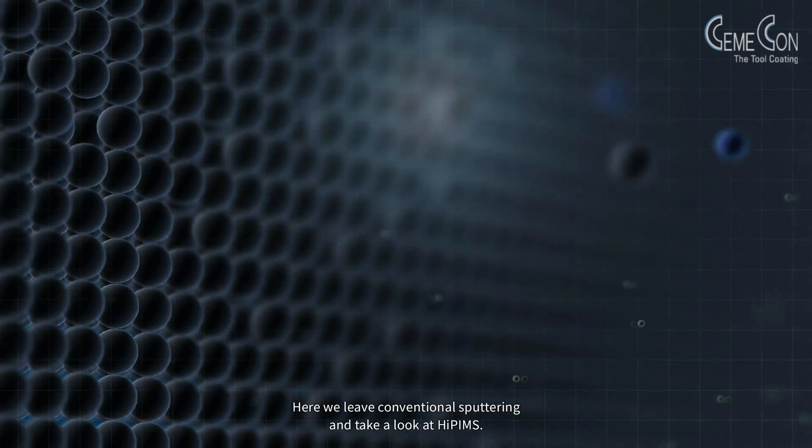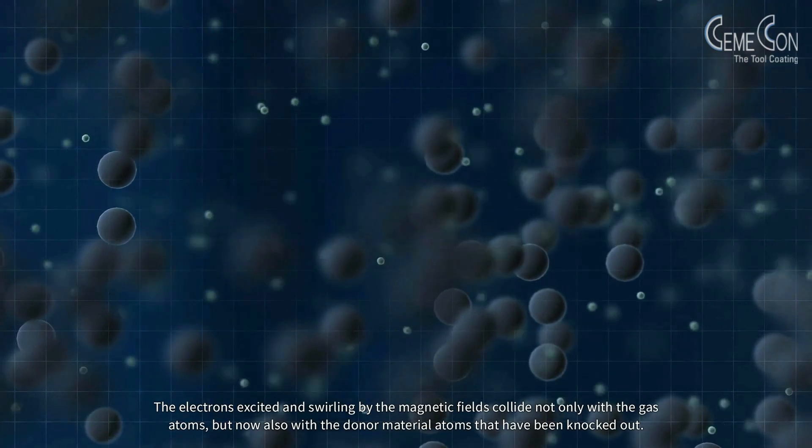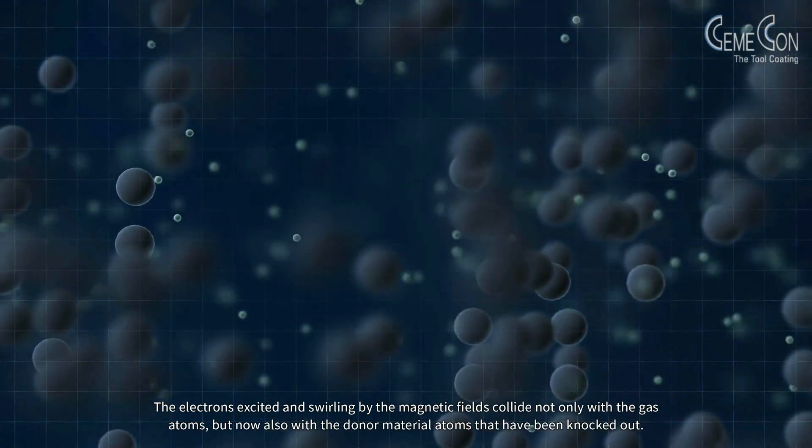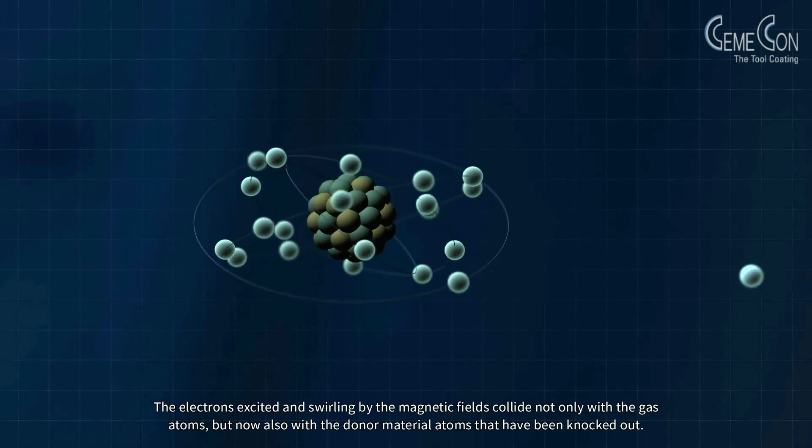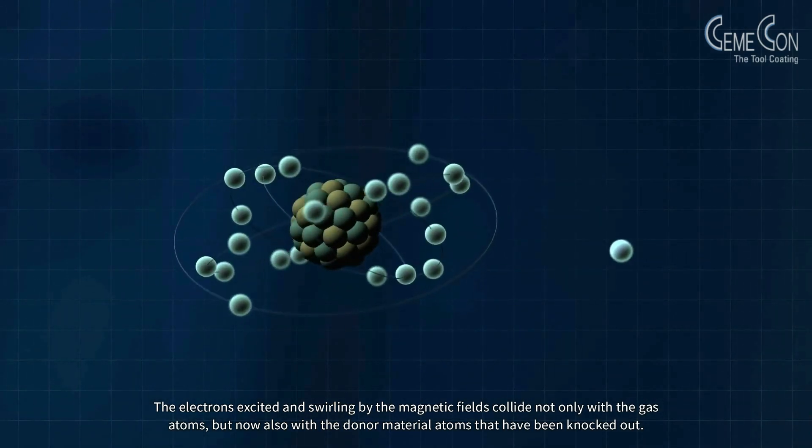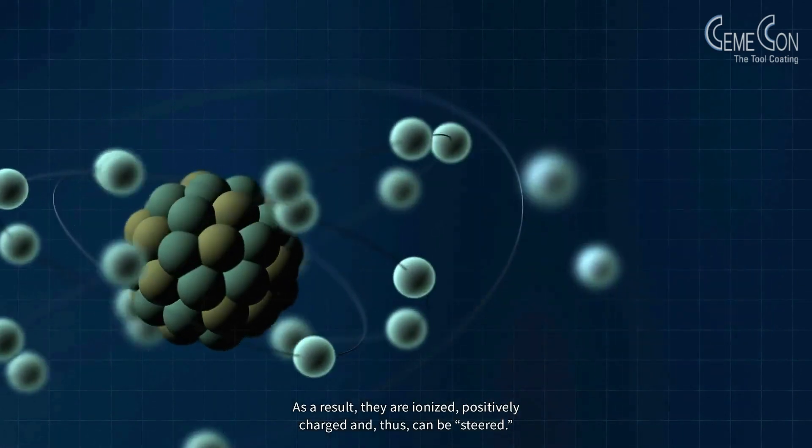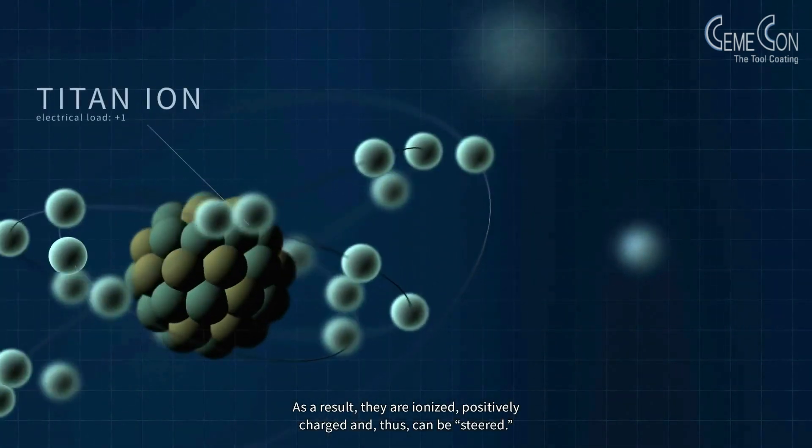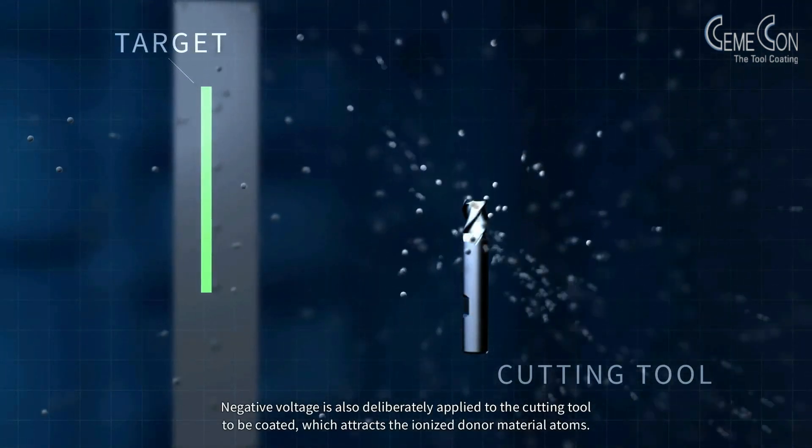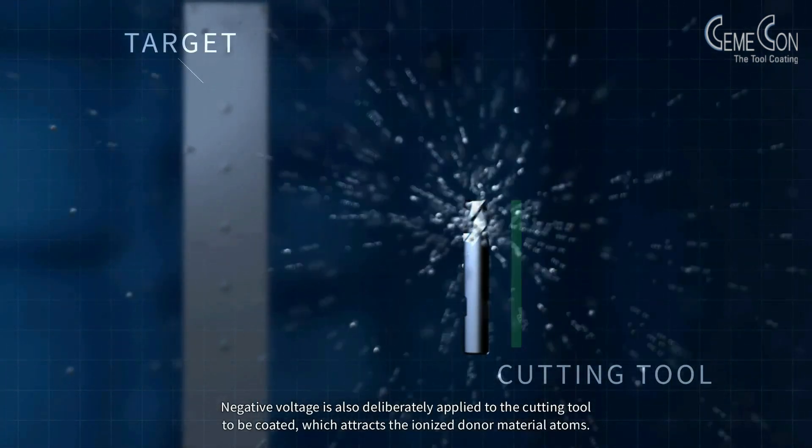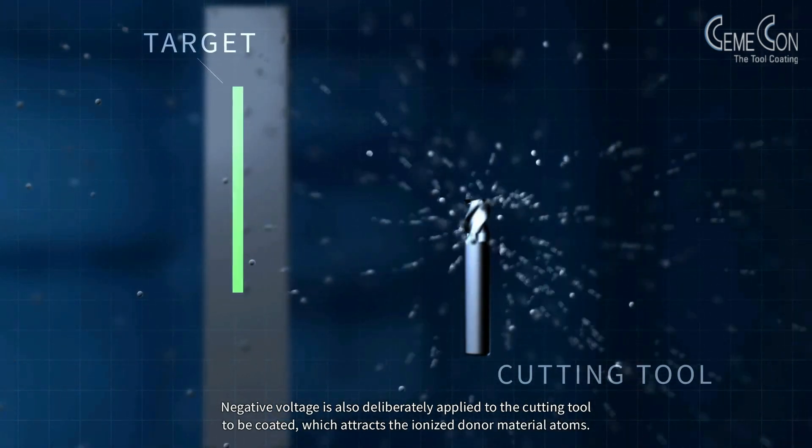Here we leave conventional sputtering and take a look at HiPIMS. The electrons excited and swirling by the magnetic fields collide not only with the gas atoms but now also with the donor material atoms that have been knocked out. As a result, they are ionized positively charged and thus can be steered.